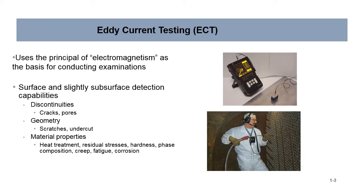Eddy Current Testing uses the principle of electromagnetism as the basis for conducting examinations. It has surface and slightly subsurface detection capabilities. Discontinuities, cracks, and pores can be found. The geometry, scratches and undercut. And then material properties: heat treatment, residual stresses, hardness, phase composition, creep, fatigue, and corrosion.